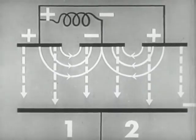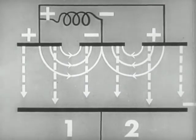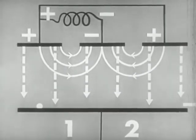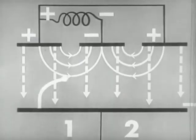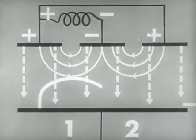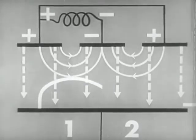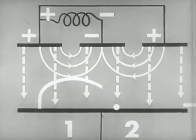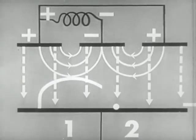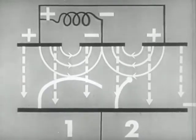Since electrons tend to move in cycloids at right angles to the direction of the electric field, an electron leaving the cathode in region one would move like this. It would strike an RF electric field in its proper phase relationship and give up energy to the RF field. However, an electron leaving the cathode and entering region two will not be in the proper phase relationship to give up energy to the RF field and will quickly be returned to the cathode.